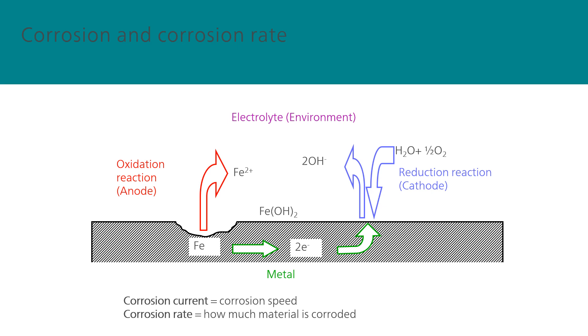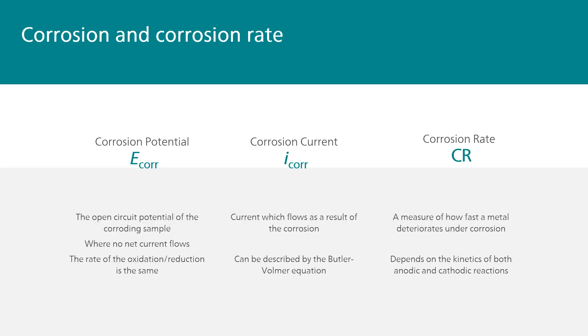If you can estimate this flow of electrons, then you also know how much material is going to be corroded with respect to time, and this is what we call the corrosion rate. There is also the corrosion potential, which is the potential that the sample has when it is in contact with the electrolyte. You can measure this by just putting the corrosion sample in the electrochemical cell and measure the open circuit potential.